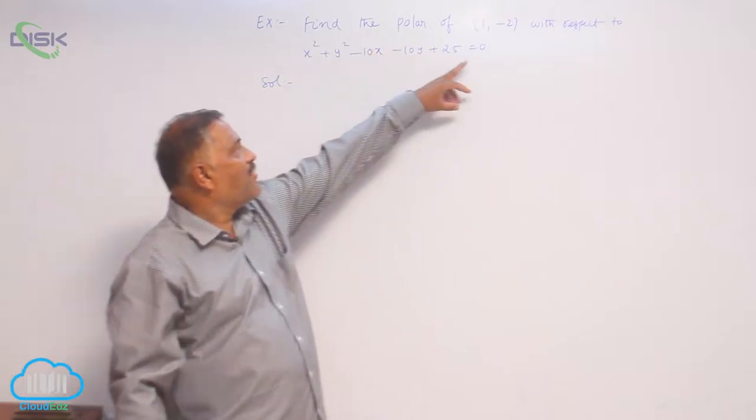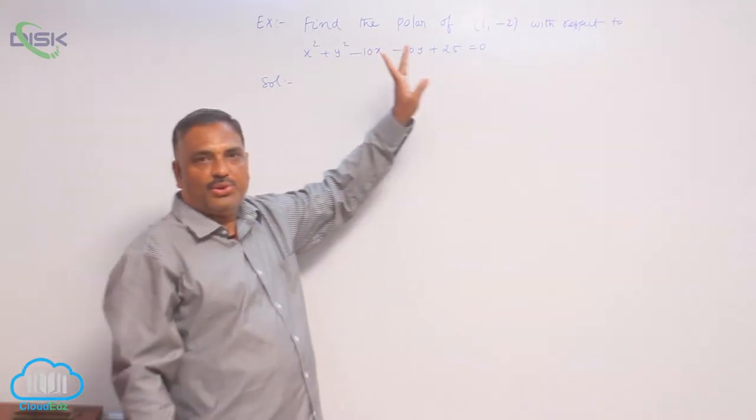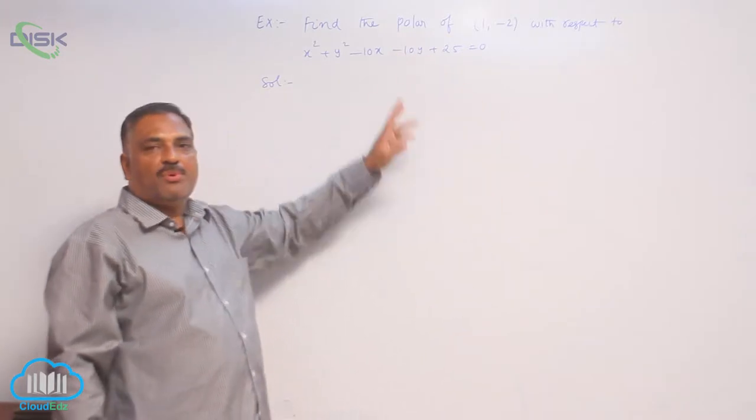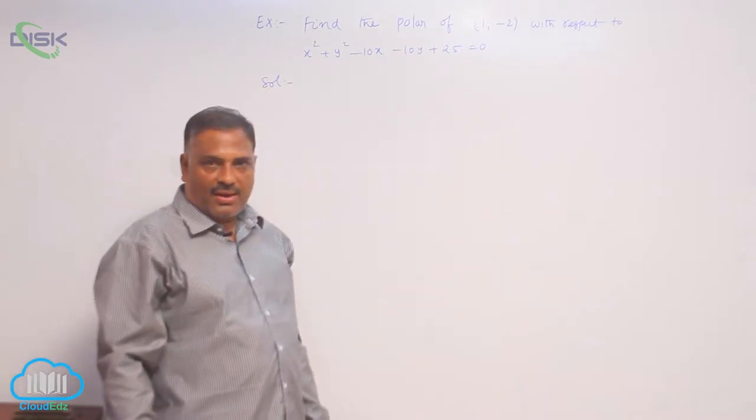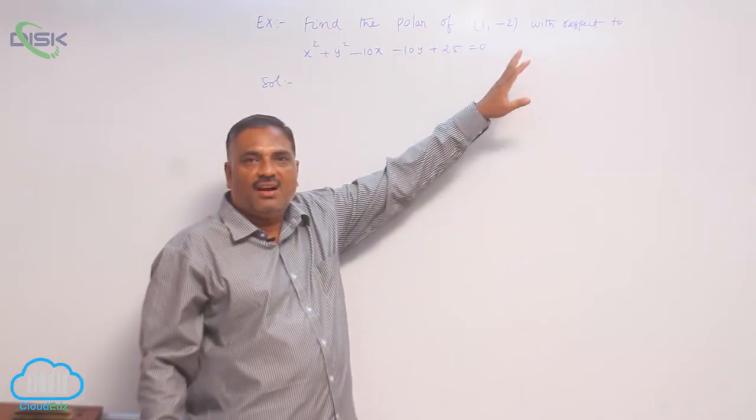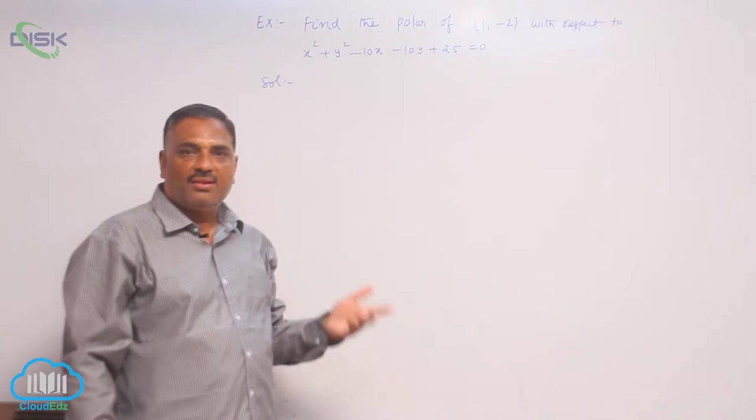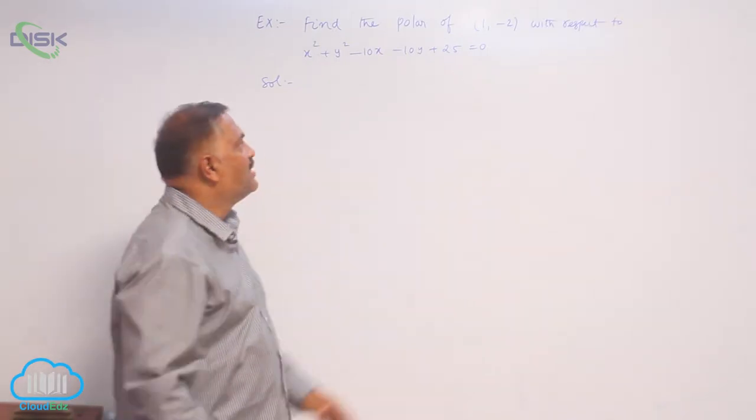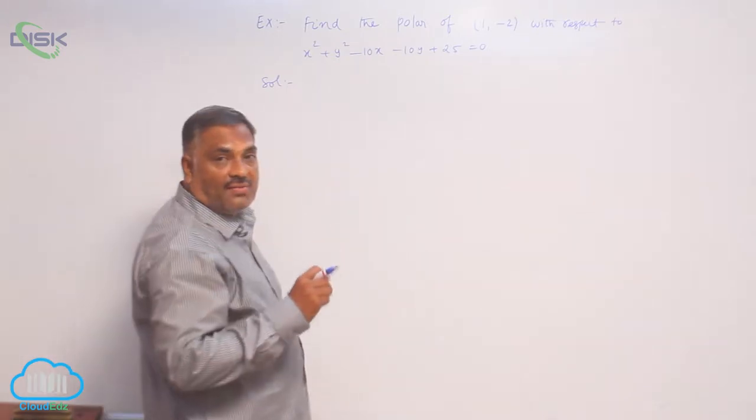We will discuss the polar of 1 comma minus 2 with respect to a circle equation. As we tested the position of the point in case of chord of contact, there is no need to test whether the point lies inside or on or outside because we know that polar in any case exists, except the center of the circle.